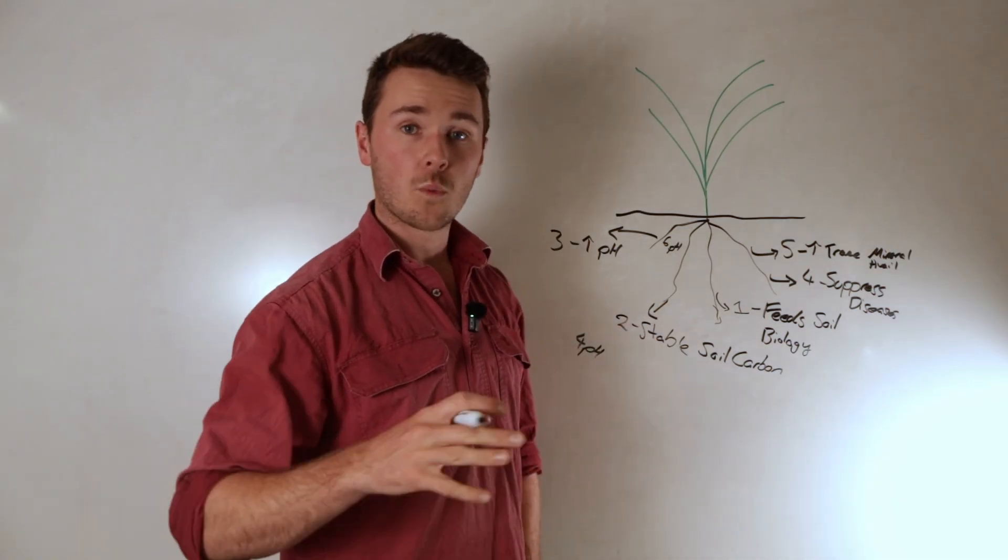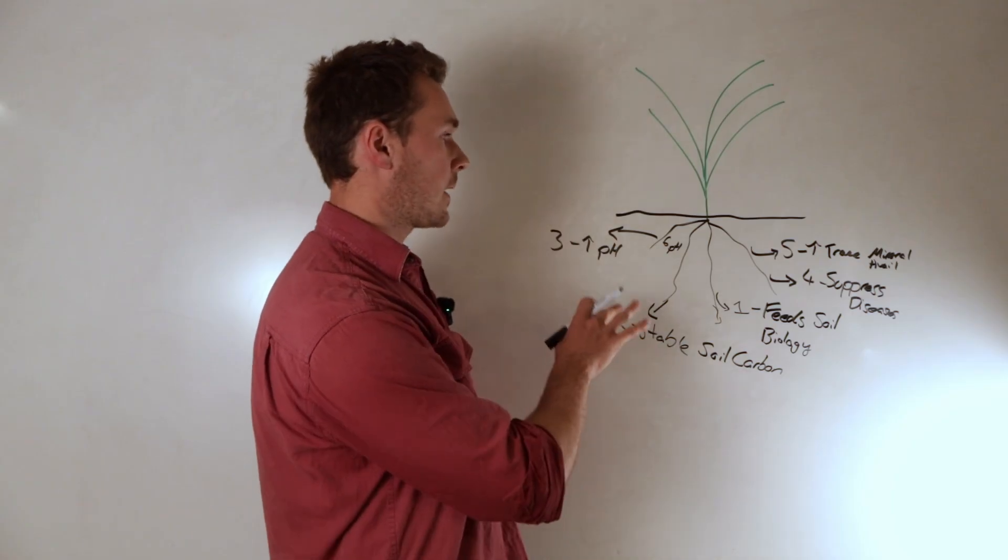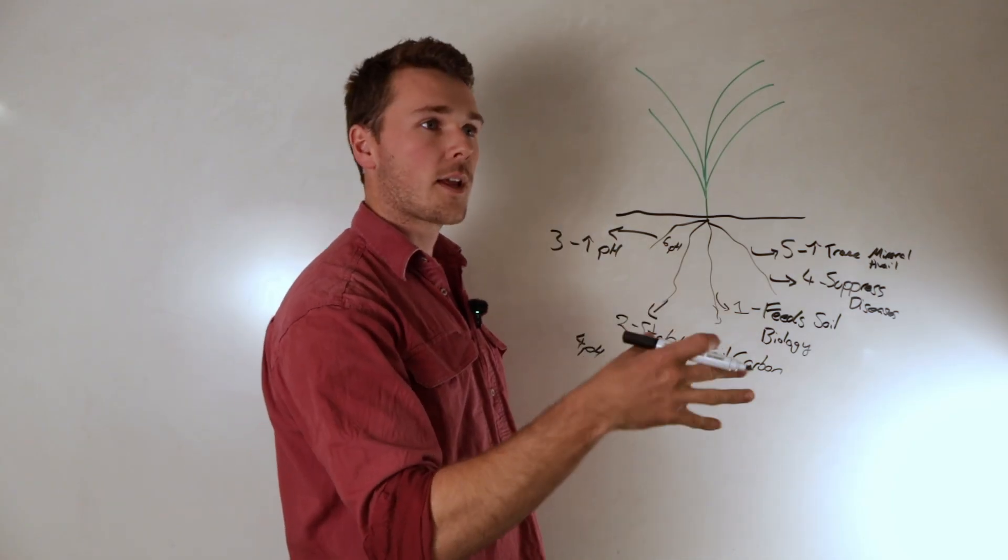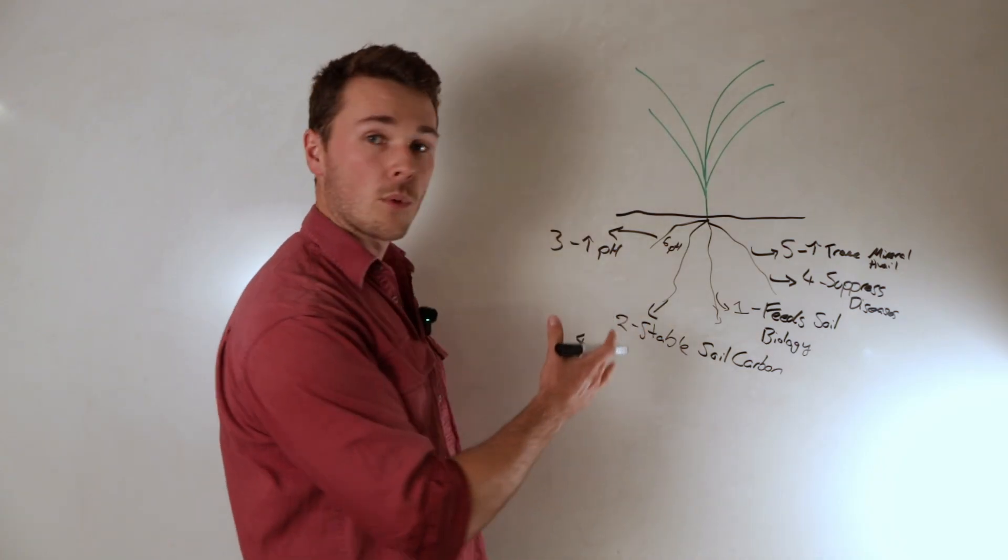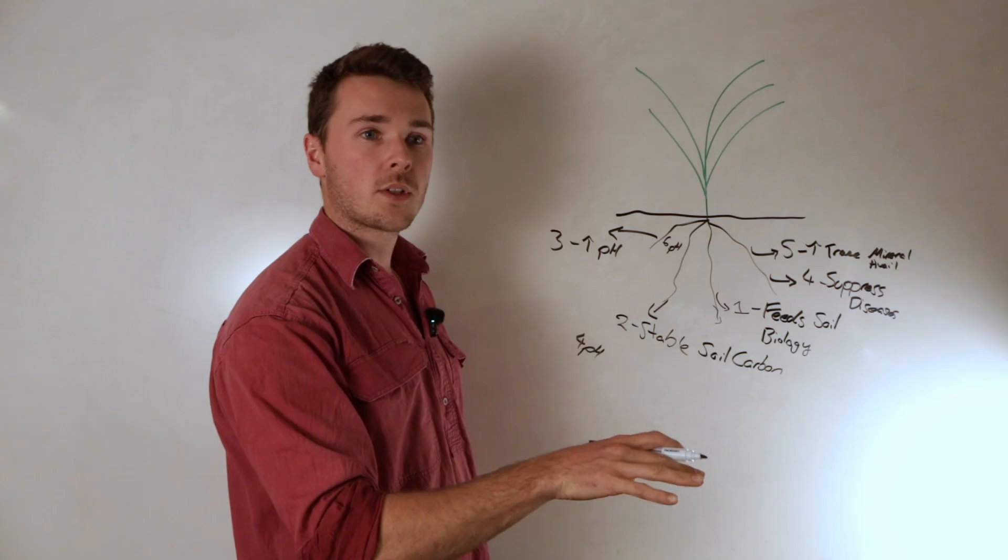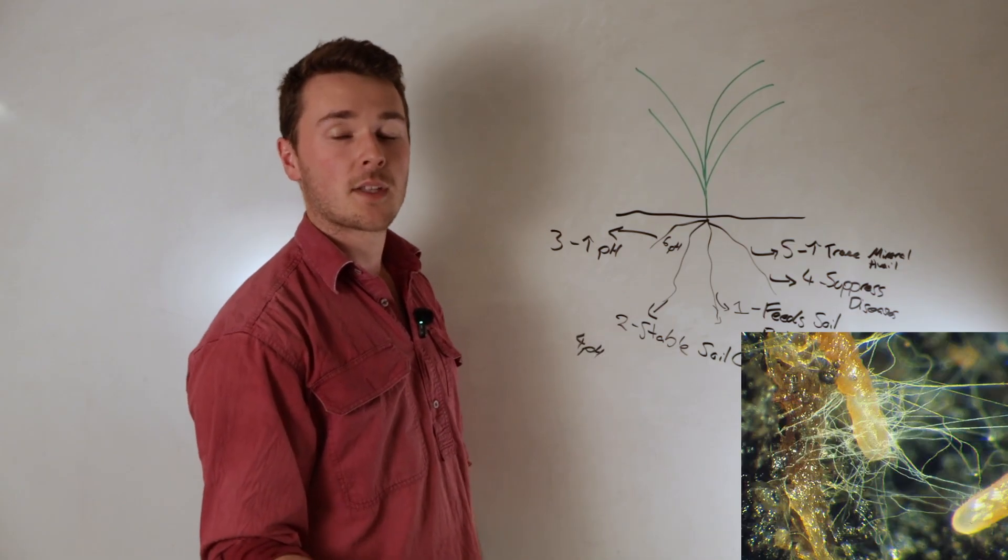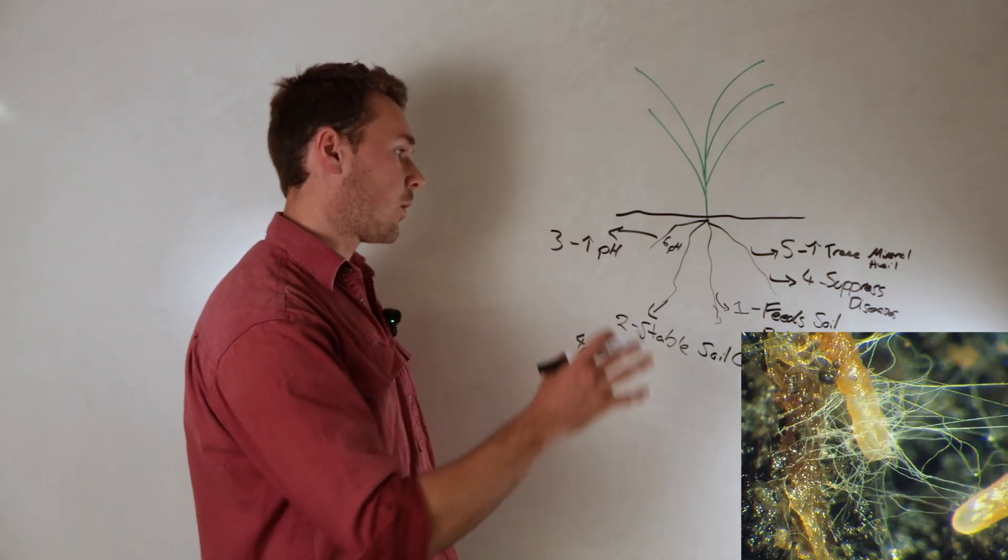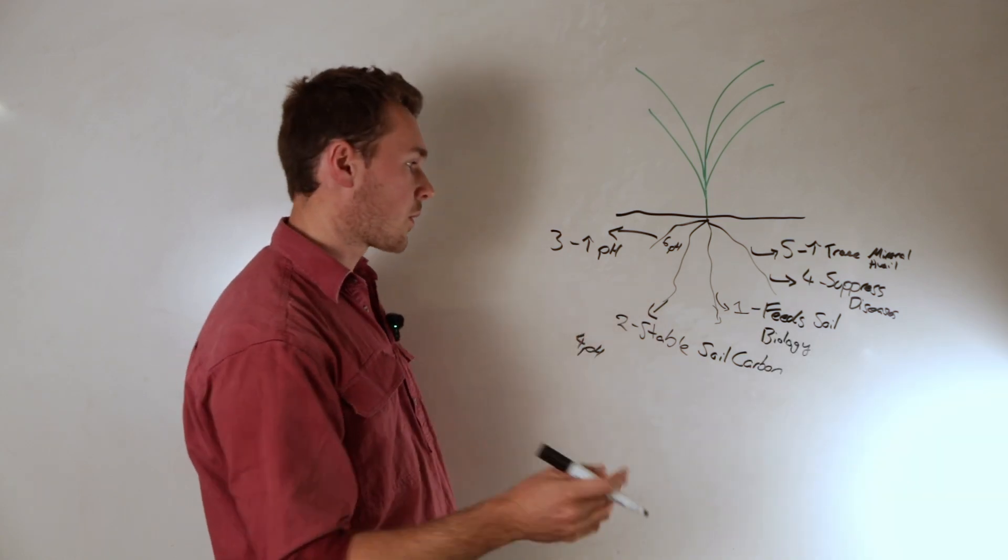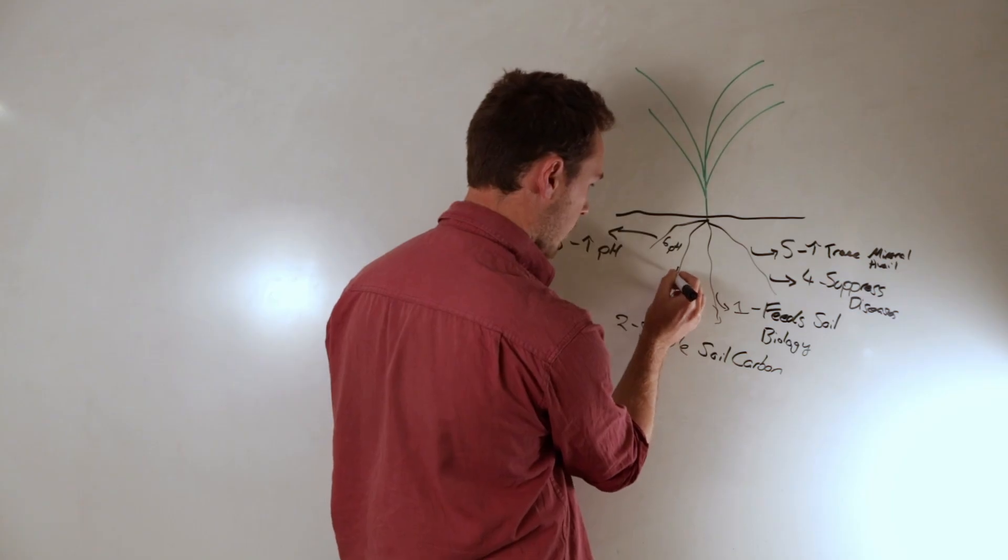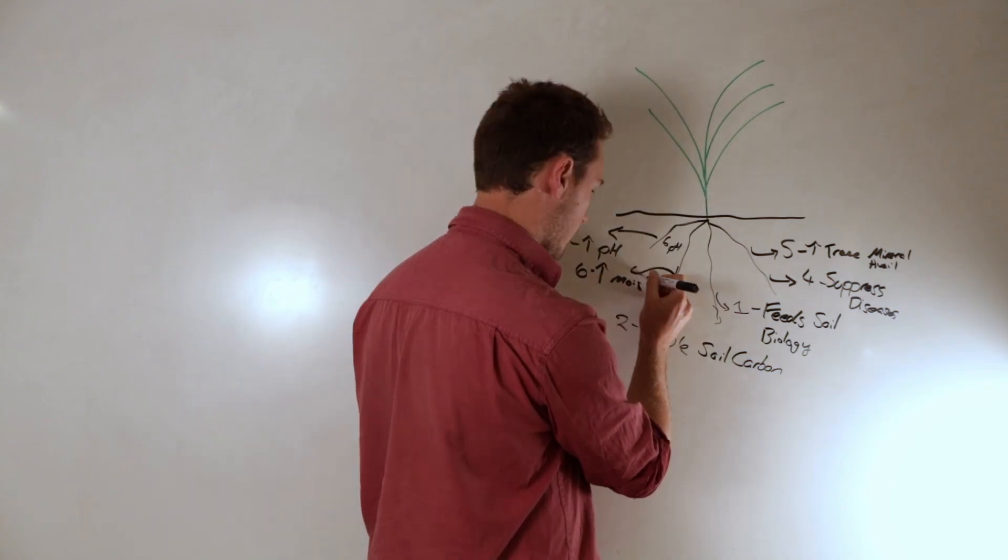Root exudates can also help with water retention. The plant can do this two ways. First, the root exudates produce almost like a mucus around the root zone which can then hold in more water. The plant can also feed mycorrhizal fungi which then produce a compound called glomalin, also a mucus type substance which can hold on to water. As a result, the root zone around the plant becomes more water efficient and increases soil moisture.